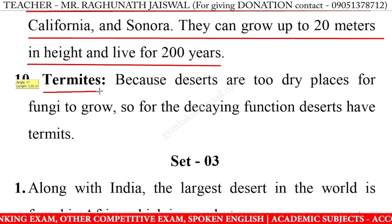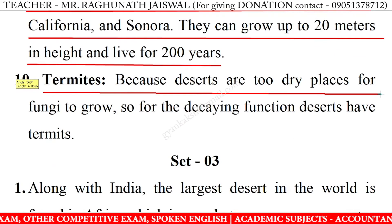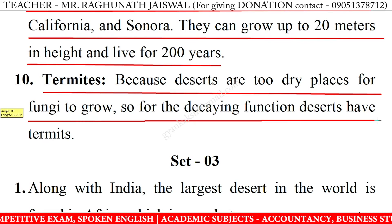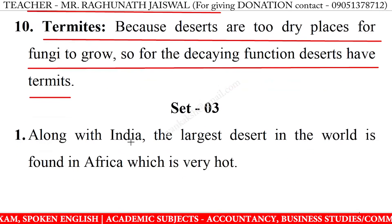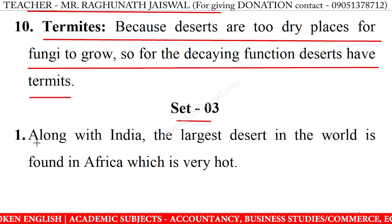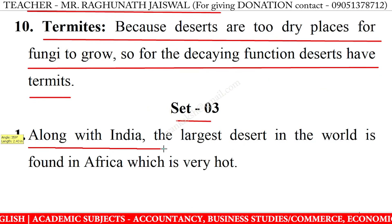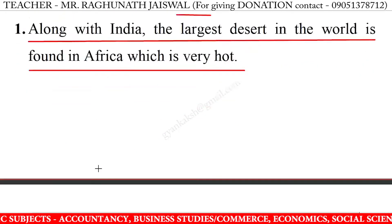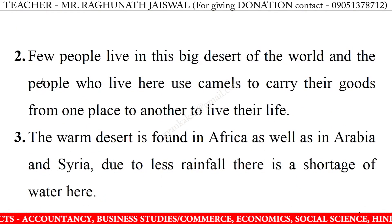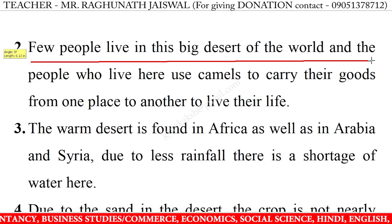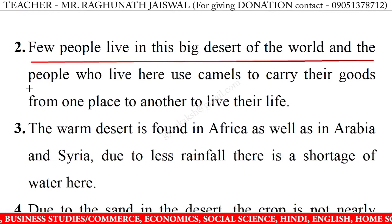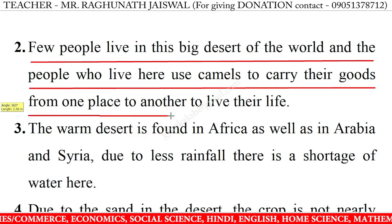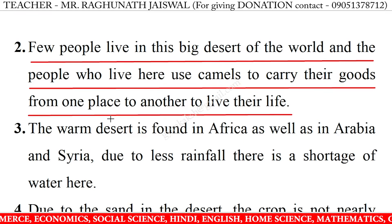10. Termites: Because deserts are too dry for fungi to grow, deserts have termites to perform the decaying function. Along with India, the largest desert in the world is found in Africa, which is very hot. Few people live in this big desert and the people who live here use camels to carry their goods from one place to another.